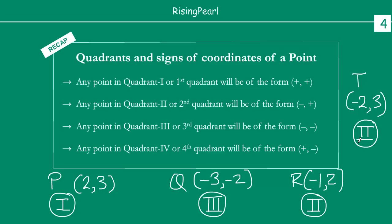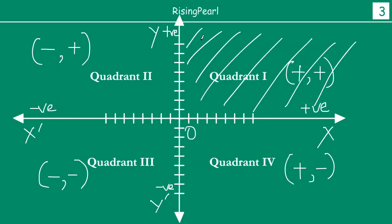This is a very important correlation to keep in mind. Just by looking at the coordinates of a point, you can tell exactly which quadrant it belongs to. Without a graph, you can determine whether a point in the second quadrant lies here or there. You need to draw the graph to find the exact location, but just by looking at the point itself you can tell whether it belongs to quadrant 1, 2, 3, or 4.